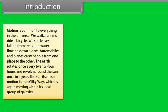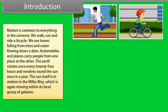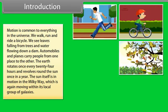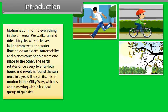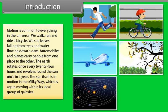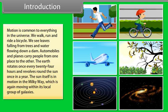Introduction: Motion is common to everything in the universe. We walk, run, and ride a bicycle. We see leaves falling from trees and water flowing down a dam. Automobiles and planes carry people from one place to another. The Earth rotates once every 24 hours and revolves around the Sun once a year. The Sun itself is in motion in the Milky Way, which is again moving within its local group of galaxies.